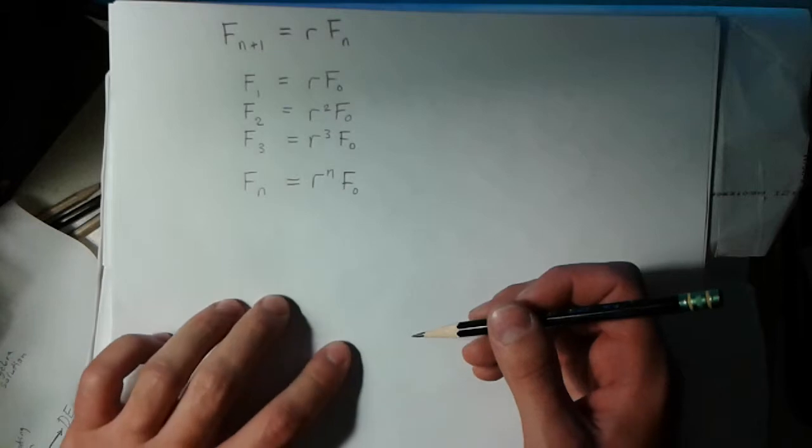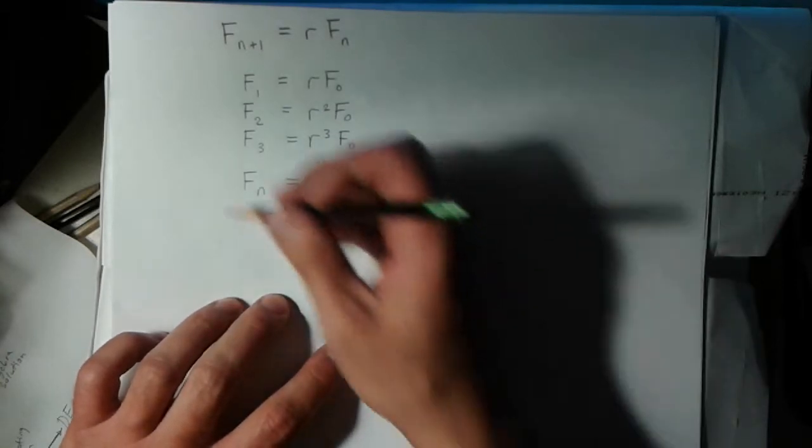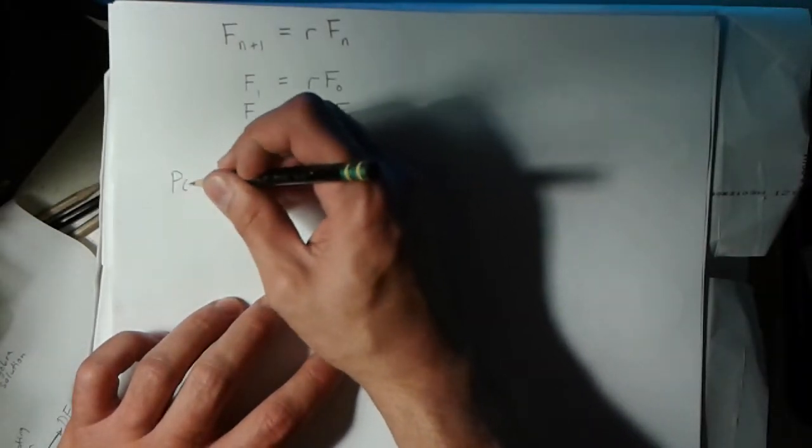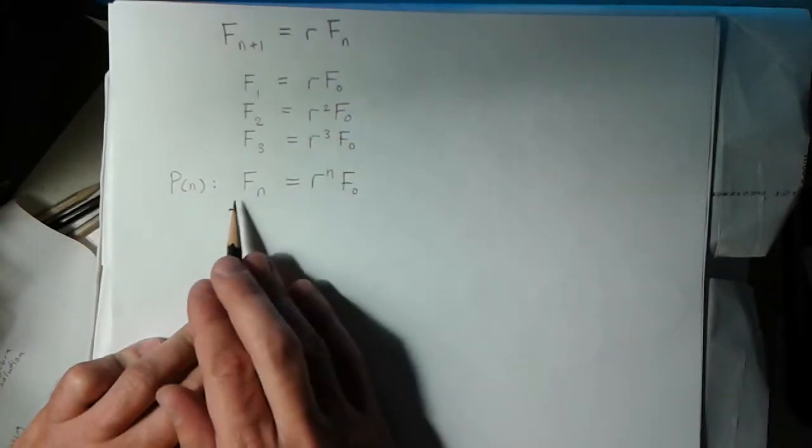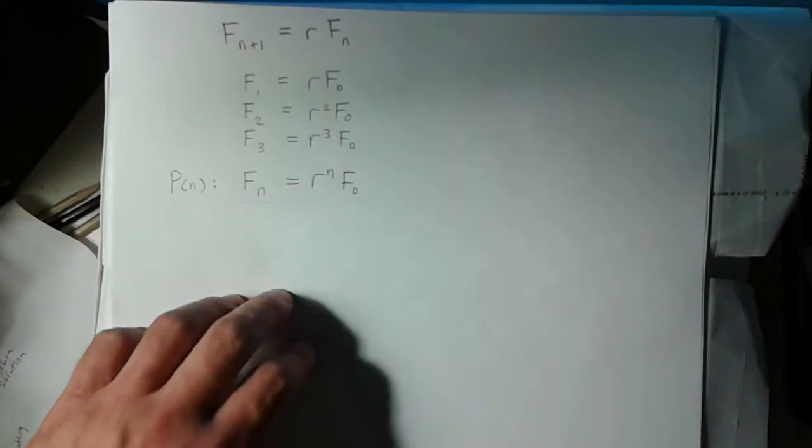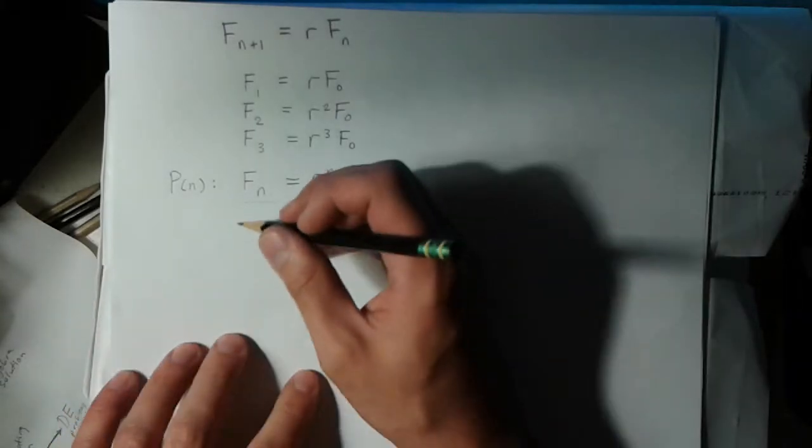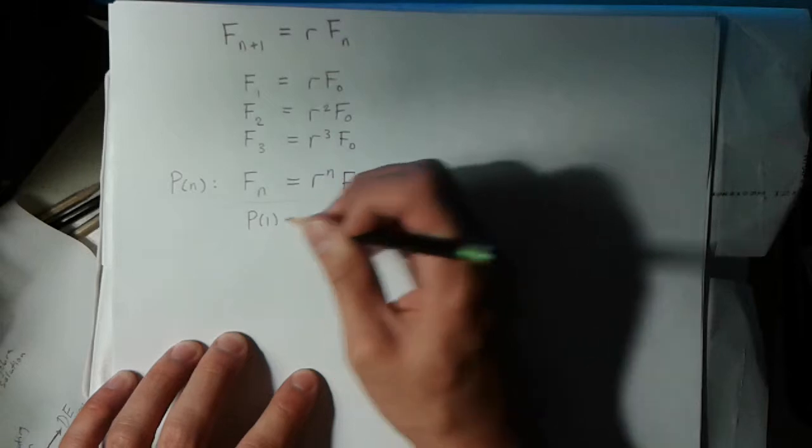What we can do is call this statement P(n). We're thinking of this entire equation as a statement that could be either true or false. We know that P(1) is true.